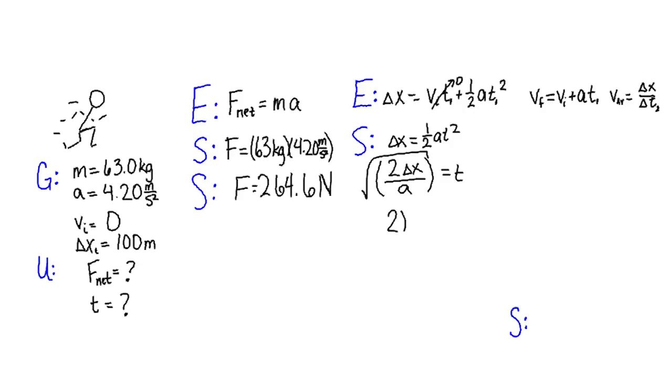Remember that your delta x in this part is 20 divided by this. Take the square root of that, put it into your calculator, and you get that his time for that first 20 is 3.08 seconds.